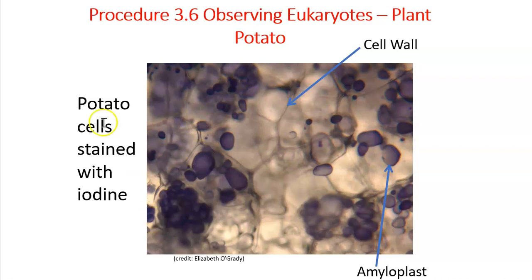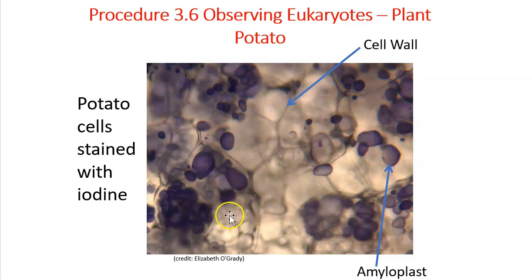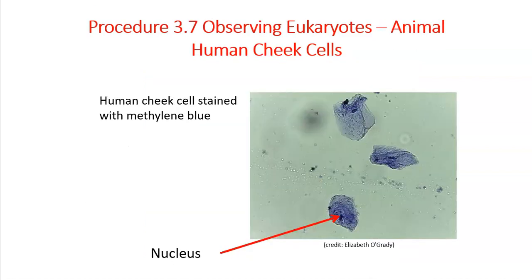Keep in mind that with each of the slides you're making, you need to read the directions very carefully. As you're reading the directions, make sure you're using the proper stain with each organism. As you're drawing your pictures, make sure you're labeling structures as shown. We're now going to move away from eukaryotic plant cells and look at one example of a eukaryotic animal cell — your human cheek cells.